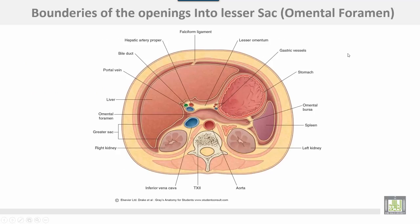This transverse section of the abdomen shows the epiploic foramen, also called the foramen of Winslow or the opening into the lesser sac. The anterior border contains three structures lying in the free border of the lesser omentum: the hepatic artery, the common bile duct, and the portal vein. The portal vein is posterior to both other structures. Posterior to the opening is the inferior vena cava.